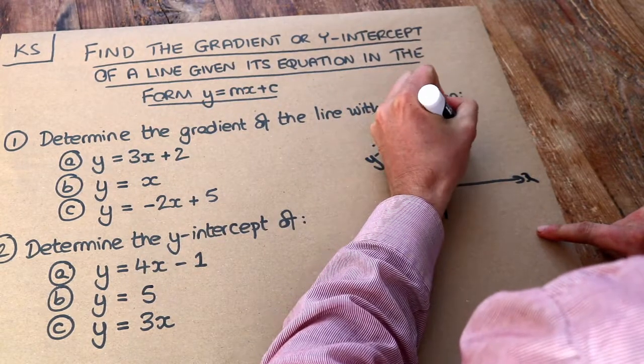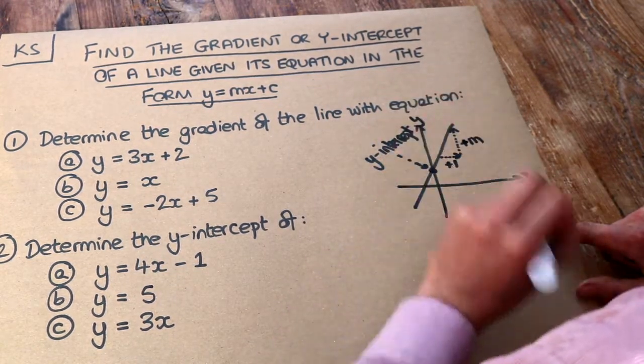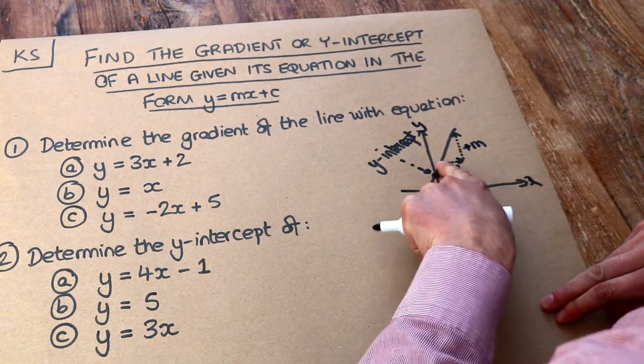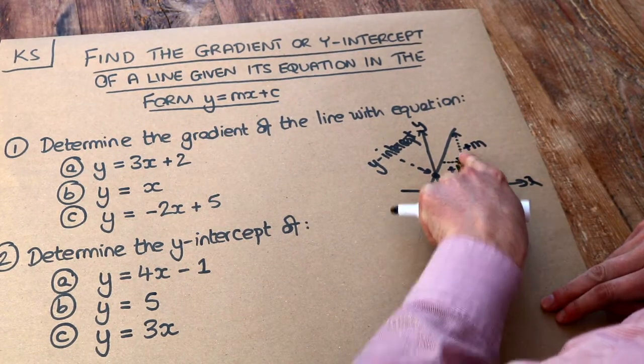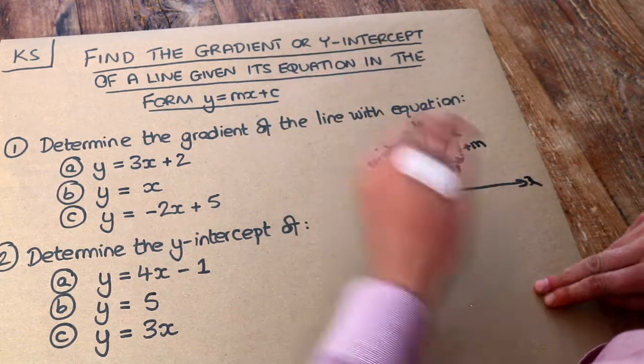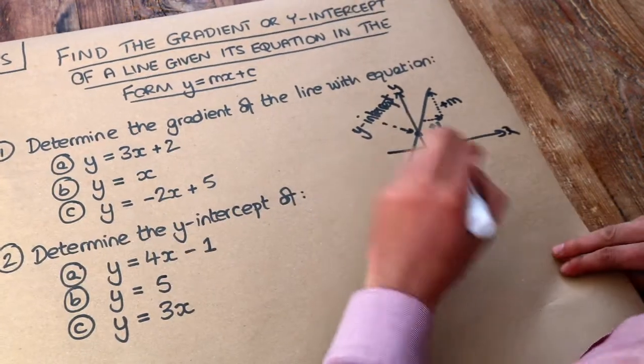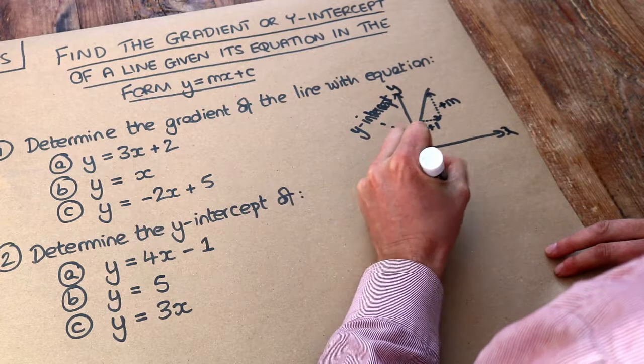So this would be plus m, where m is the gradient. So for example, if for each time you went across by 1, you went 3 up, then the gradient m would be 3. And we can write the equation of a straight line in this form.